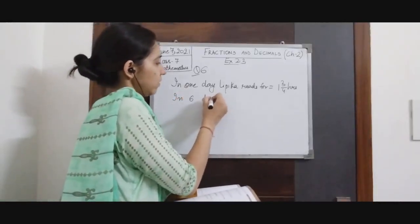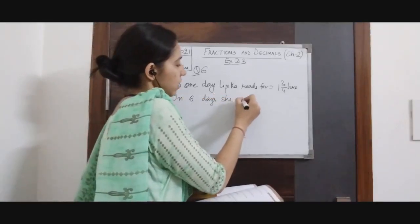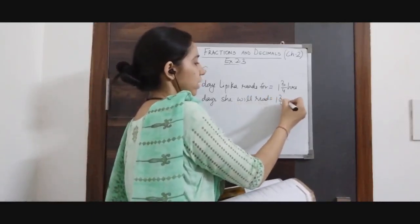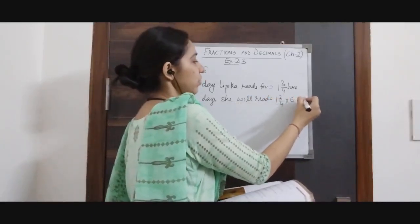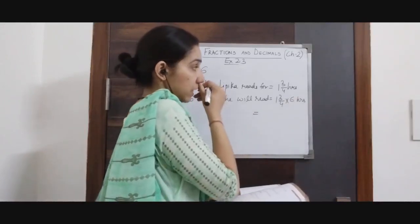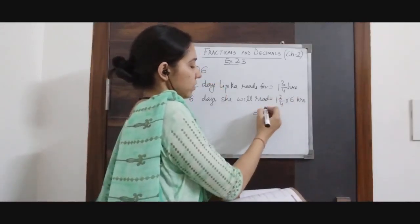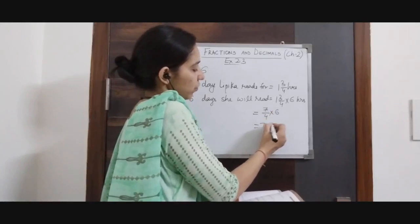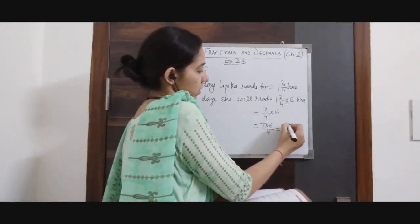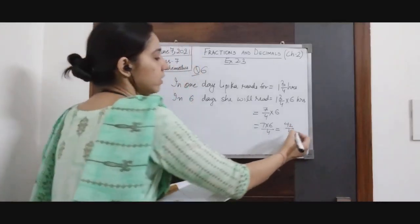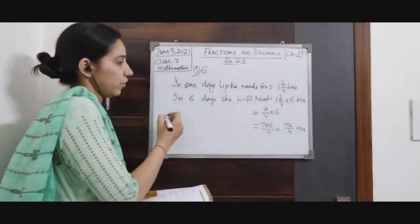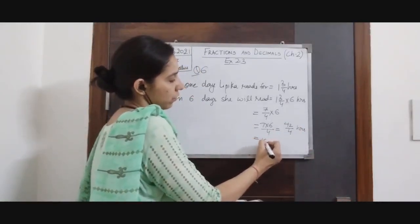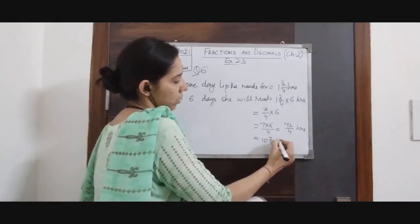In 6 days she will read for 1 and 3/4 × 6 hours. Converting to improper fraction: 4 × 1 + 3 = 7, so 7/4 × 6 = 7 × 6 / 4 = 42/4. Again this is an improper fraction; we convert it to give 10 and 2/4, which simplifies to 10 and 1/2 hours as the answer.